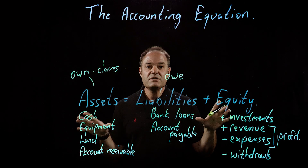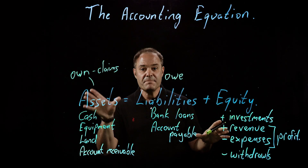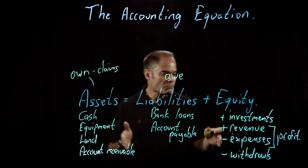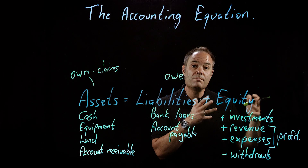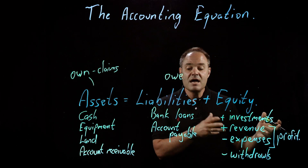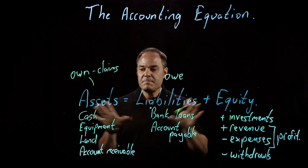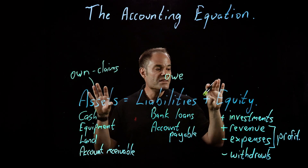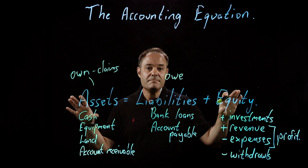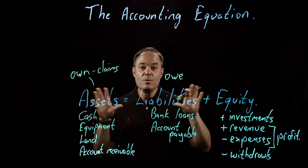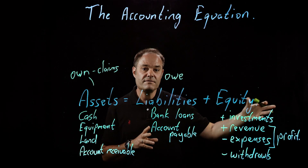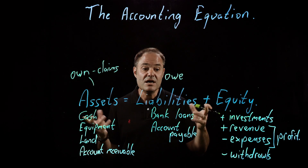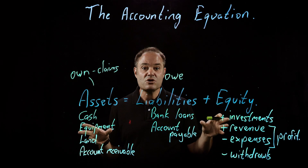Now when we look at this equation, what it really tells us is that the assets — everything that the company owns — is paid for either by borrowing money, incurring a liability, or by adding to investments or making money, essentially paid for out of profits. This equation always, always, always has to be in balance. Anytime we do anything in accounting, we have to make sure that this is in balance. Stay tuned for our next discussion where we're going to talk about transactions.